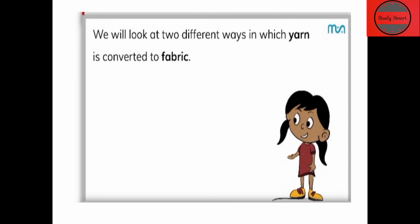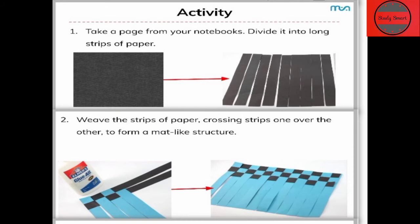In this video we are going to discuss about one of them. To understand it, we do an activity which shows us the first way to make fabric from yarn. For this we need a notebook — we take a page out of it and divide it into long strips. As shown in the picture, we take a paper and divide it into long strips, using two colors to distinguish between the two different strips.